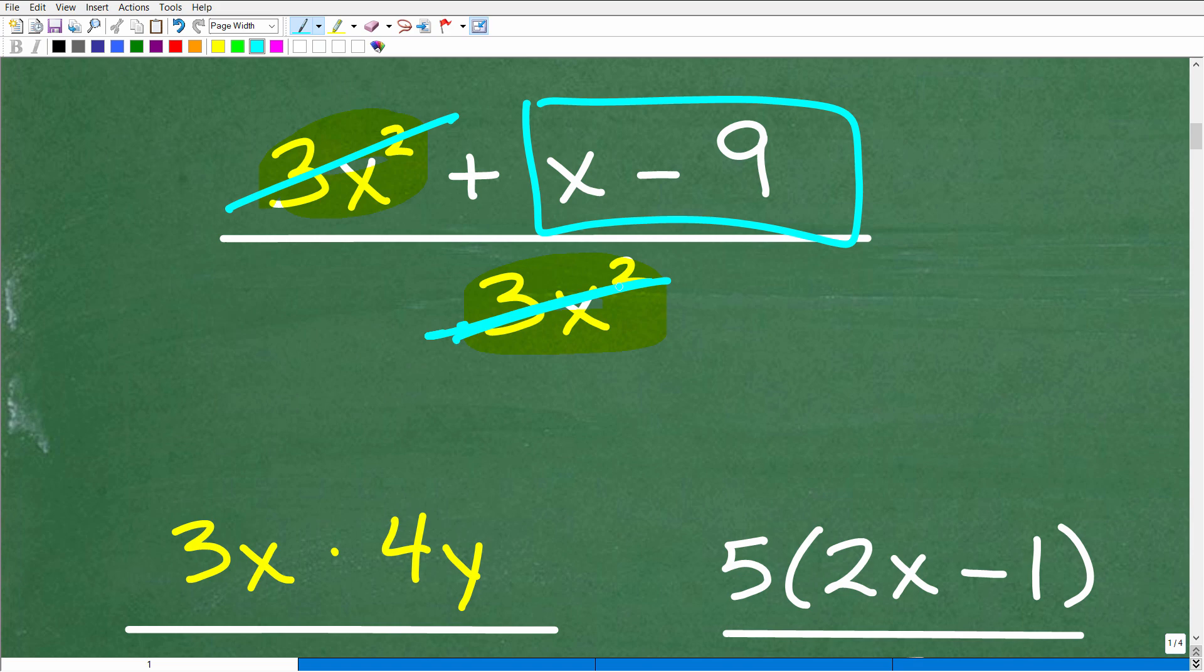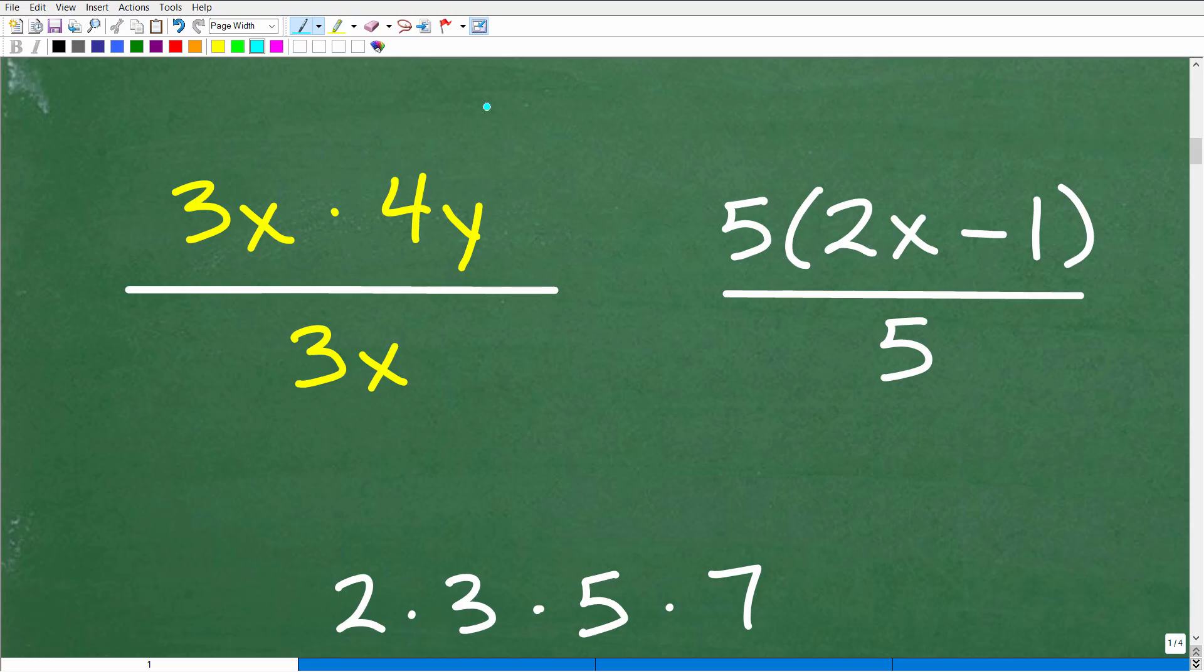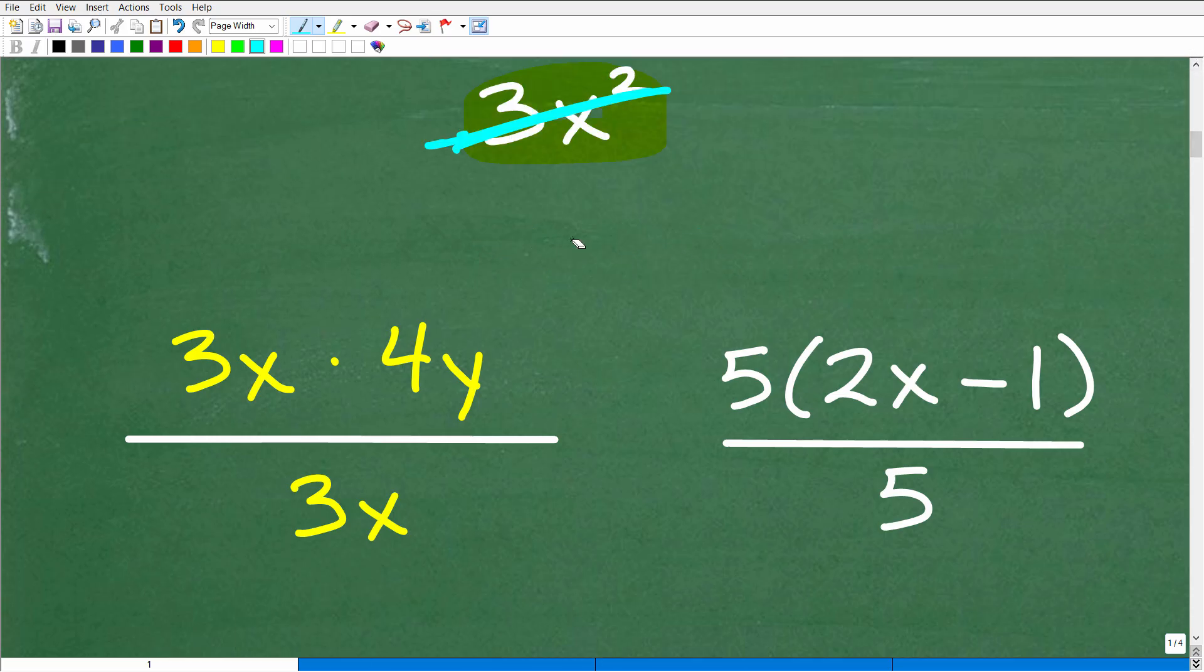But people are confusing this, doing this with something else. And we're going to talk about that something else right now. Okay, so when can you cross-cancel things in mathematics? Well, you can only cross-cancel like factors. Okay, factors. All right?